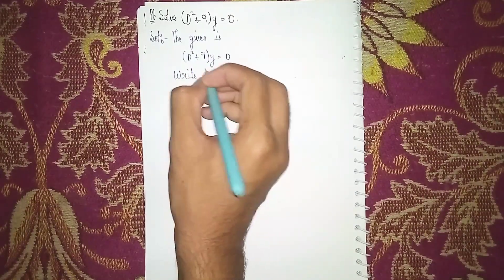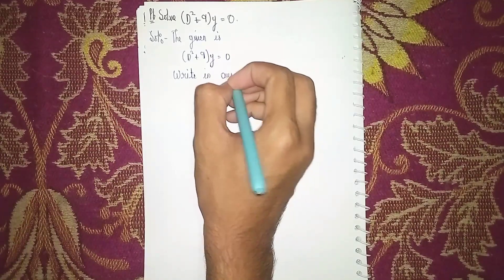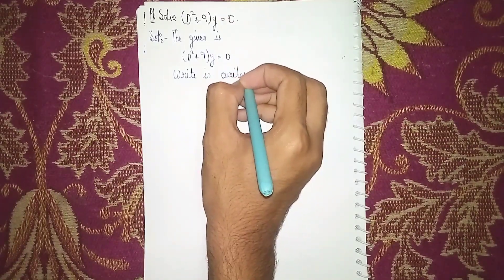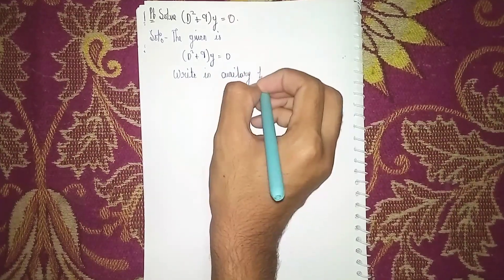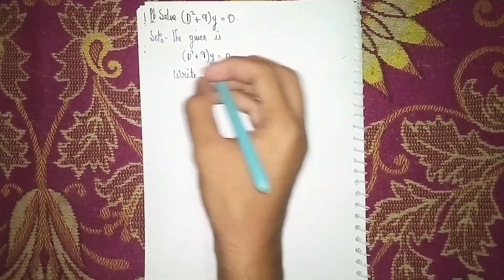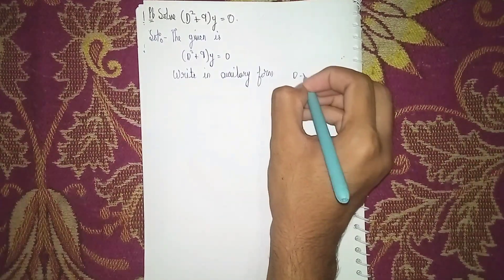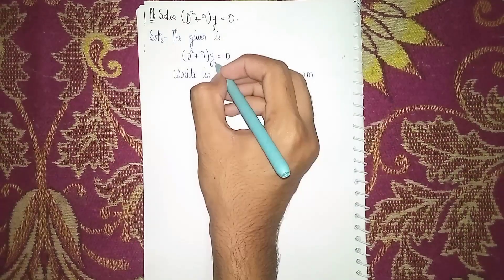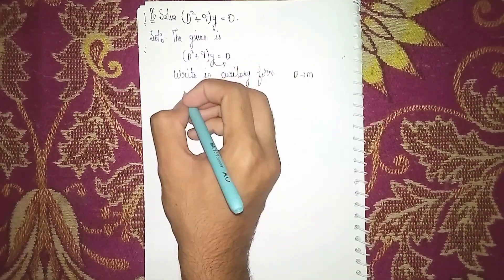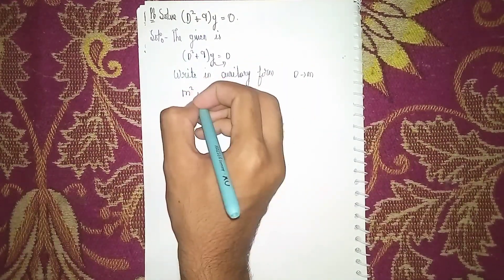Now write in auxiliary form. Auxiliary form means instead of d we put m. Find the root. It will become m² + 9 = 0.